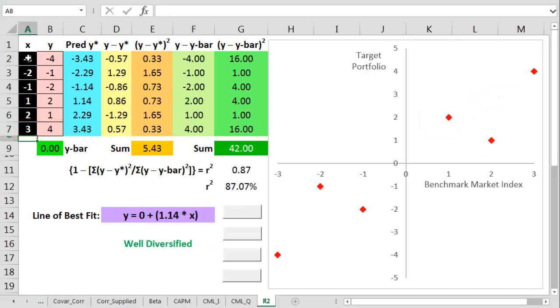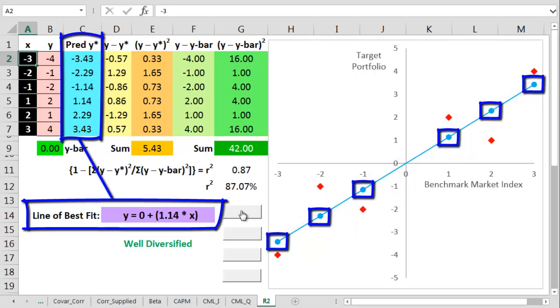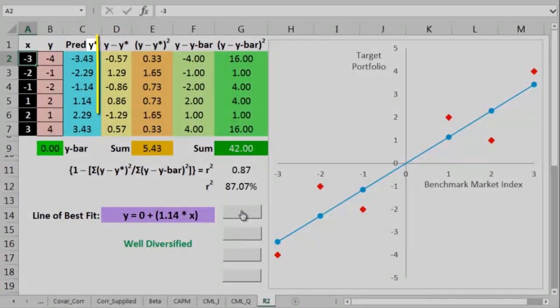a line of best fit, and we can use something like a least squares method to do this. The line of best fit predicts what each y value should be given any particular market value. And we're going to label this predicted number y star. Next up,